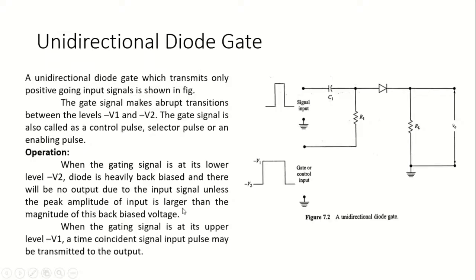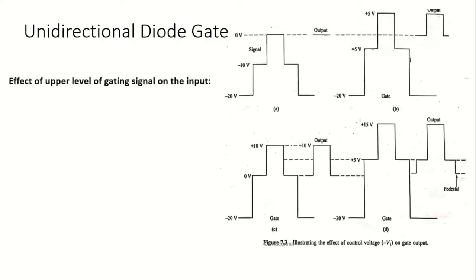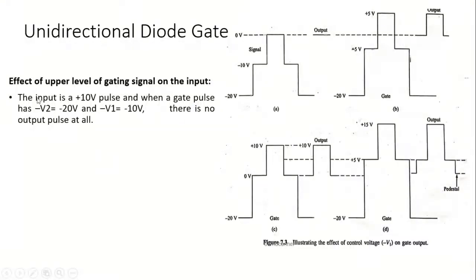Consider an example with a control signal of minus v2 = minus 22 volts and minus v1 = minus 10 volts, and an input signal of plus 10 volts. The input is a 10-volt pulse to be transmitted through the sampling gate. When the gate pulse has minus v2 = minus 20 volts and minus v1 = minus 10 volts, since the input is plus 10 and minus v1 is minus 10, they add to zero — so the output is zero.